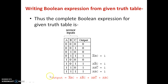So this is our boolean expression derived from the given truth table. Now for this boolean expression, we have to design a circuit by using simple logic gates. We will see how to construct a circuit for this boolean expression using simple logic gates in the next slide.